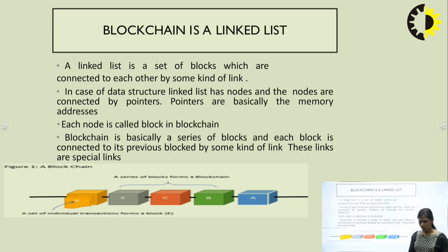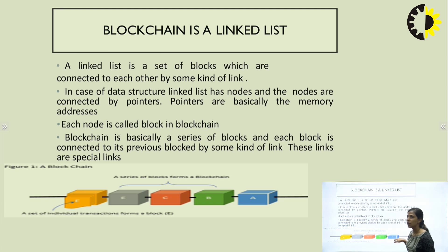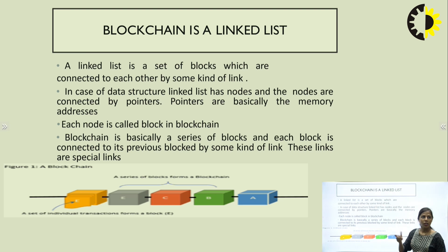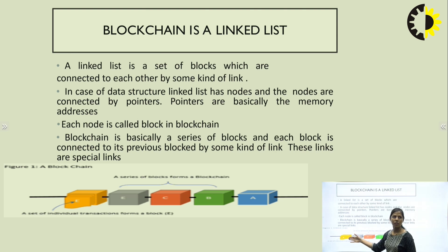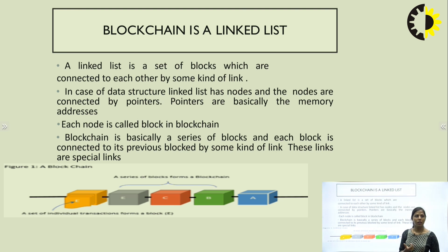First of all, blockchain is a linked list. We have already discussed linked lists in data structures — a list with nodes. Here we have a list of blocks, similar to data structure. In a linked list, nodes are connected by pointers representing memory addresses. In blockchain, each node is called a block and they are connected via a chain — that is why the term blockchain comes. These blocks are connected using hash functions, which provide security.